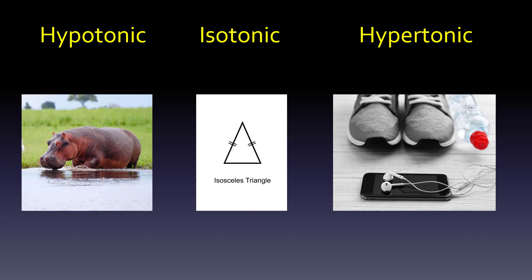For mnemonics: think of a hippo for hypotonic — it shares many letters of 'hypo,' and you picture water going into the hippo and making it large. The isosceles triangle has equal sides, so it represents isotonic — inside and outside the cell are equal. And the skinny cell represents hypertonic. A lot of people think of a skinny runner who's hyper, though personally as a runner I'm just very consistent.